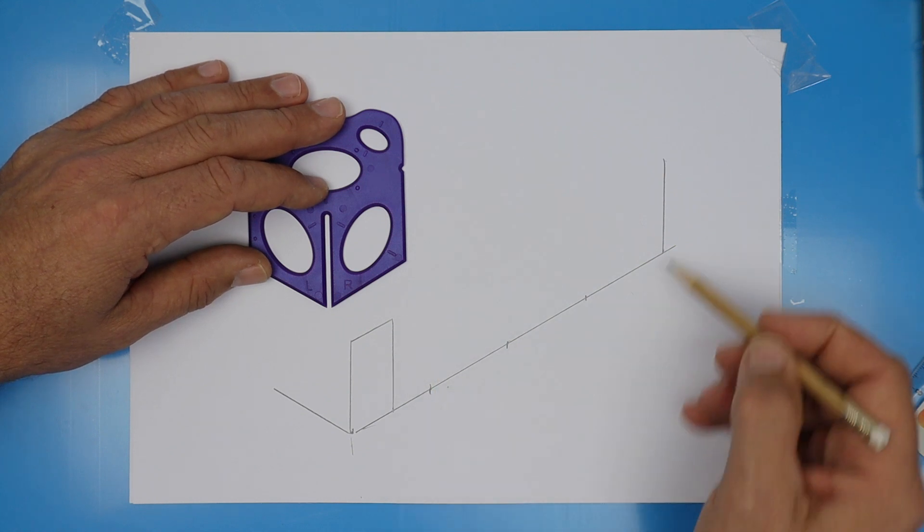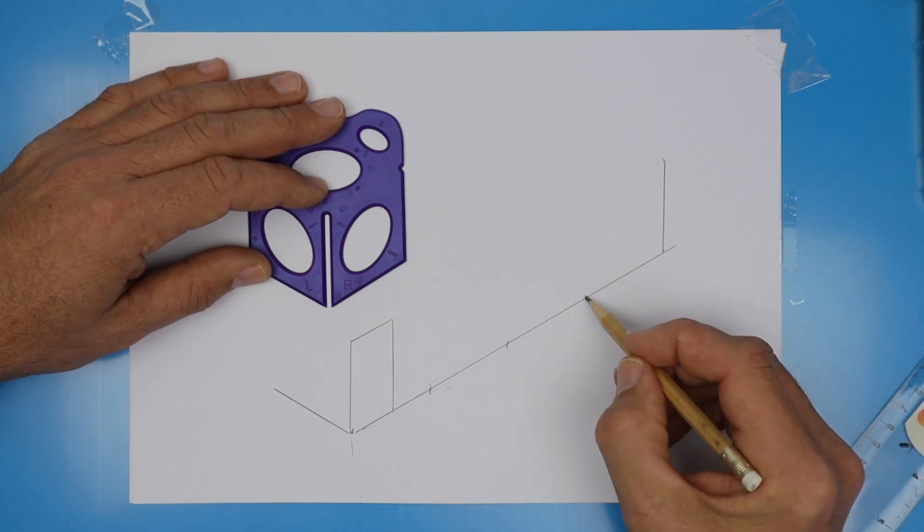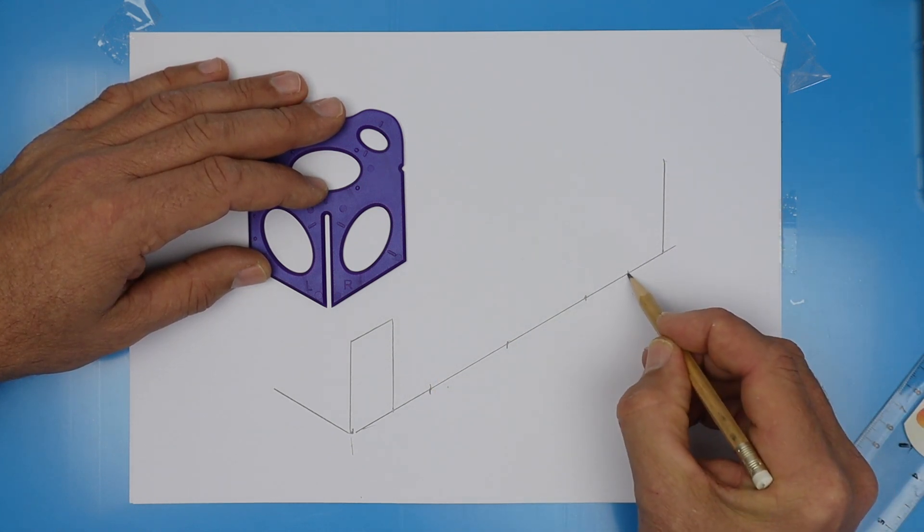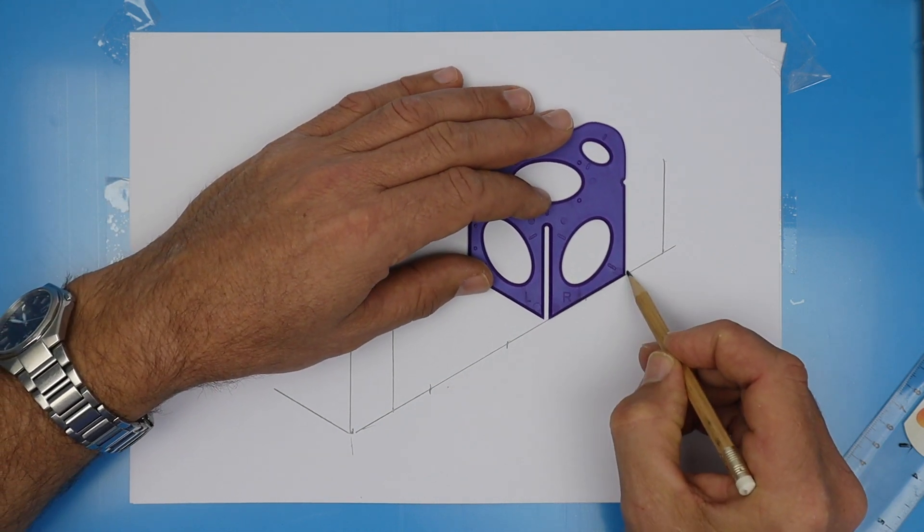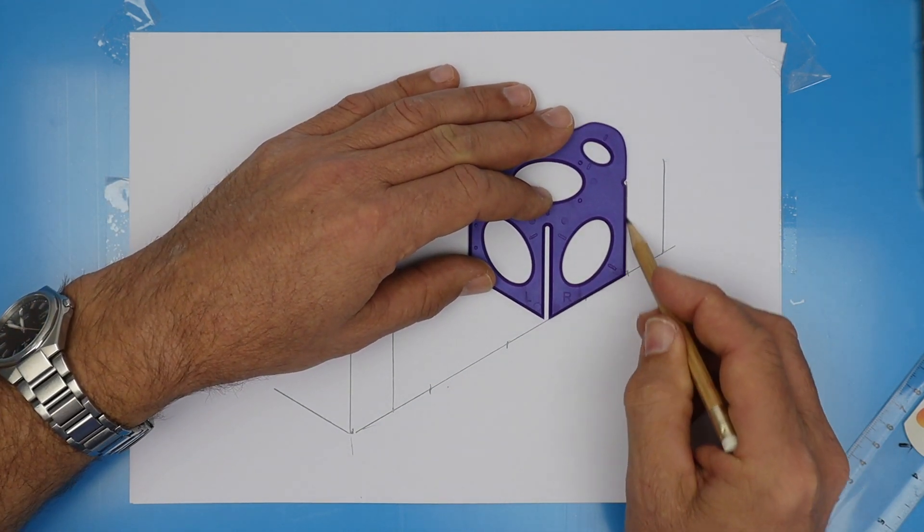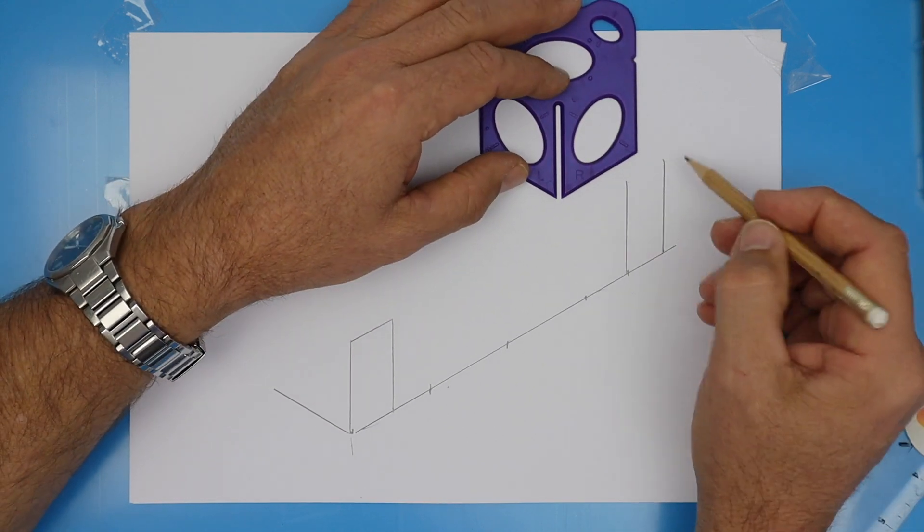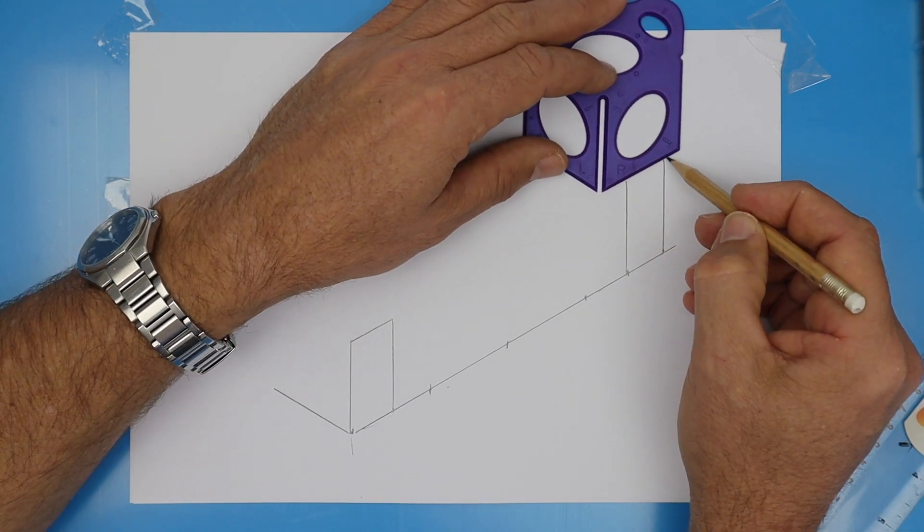We're going to do the same thing at the back. Halfway between those two marks, line up your splat on that line to make sure that's straight up and down. And from the little blip, come down. At the top, use the isometric line to join. Great.